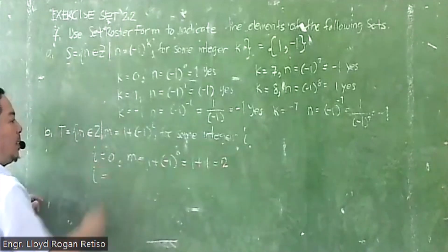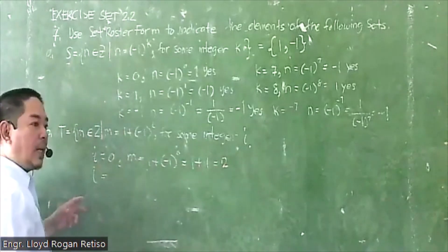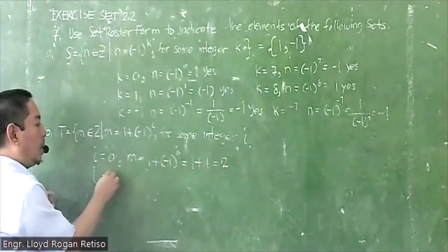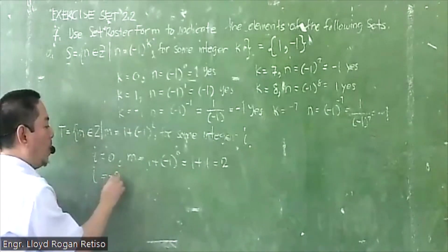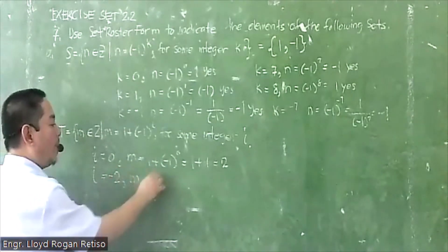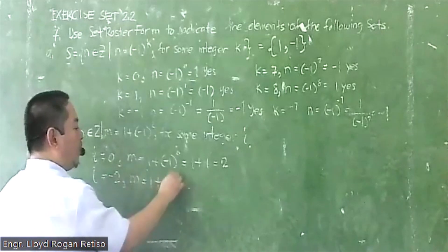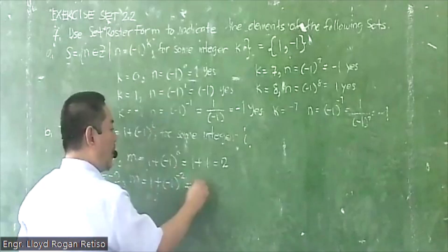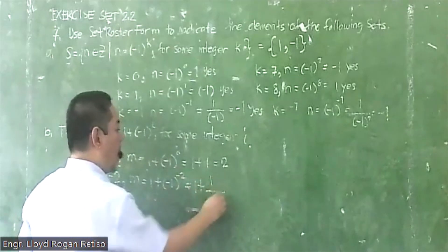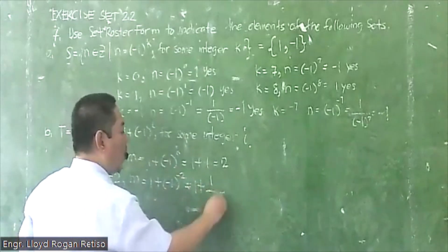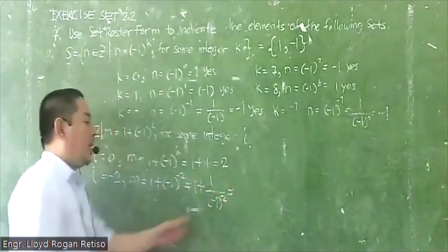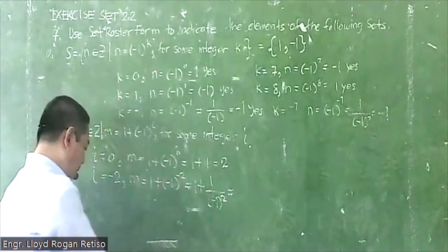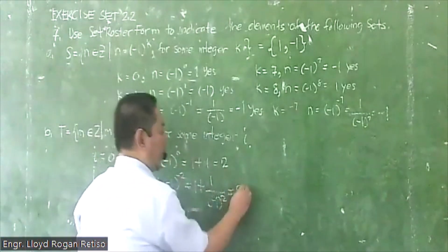Let's say i equals negative 2. So m equals 1 plus (-1)^(-2), that will be 1 plus 1 over (-1)^2. Since (-1) times (-1) is positive 1, your answer is 1 plus 1 equals 2.